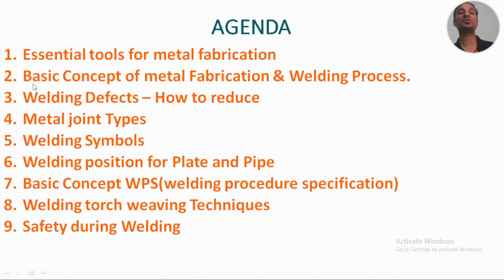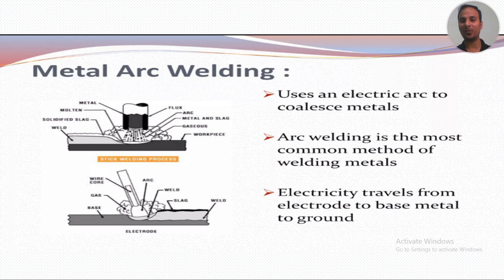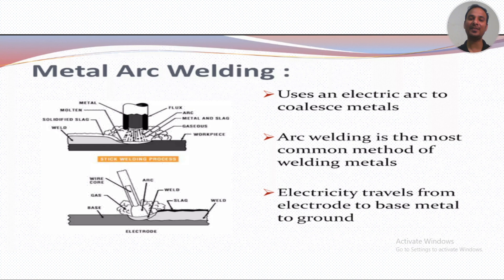Today we want to discuss the concept of metal fabrication and welding processes. We know the basic types of welding: Shielded Metal Arc Welding (SMAW), Gas Metal Arc Welding (GMAW), Gas Tungsten Arc Welding (GTAW), Submerged Arc Welding (SAW), and Plasma Arc Welding (PAW). This picture is showing these processes to you.